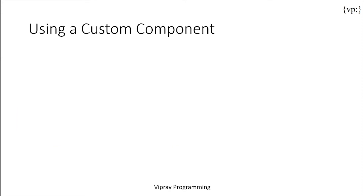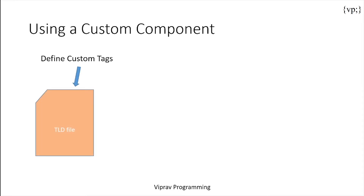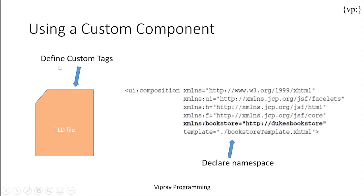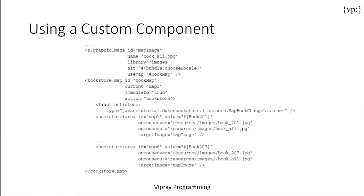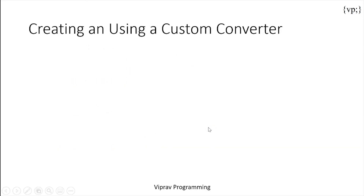To use a custom component, you must first define any custom tags used in the component in the TLD file, which is a configuration file similar to web.xml where you define custom tags. Then you include the namespace inside your page so it has access to the tags. Finally, you add the component's tag to the page. This example shows the different ways you can use a bookstore tag in your code.